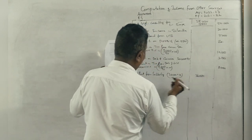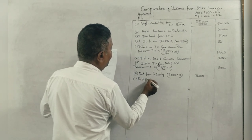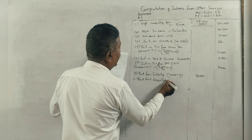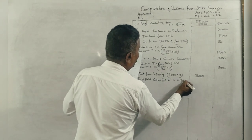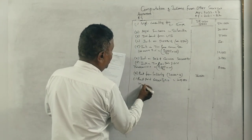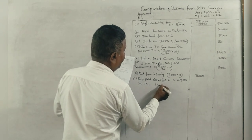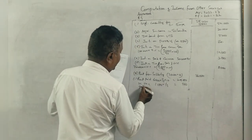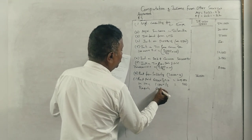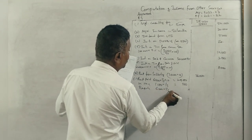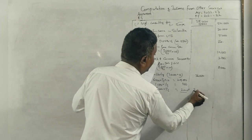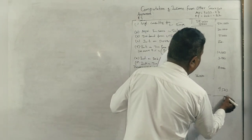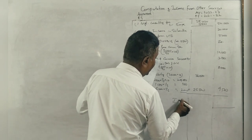Less: Rent paid for the sublet portion, Rs. 6,000 into one-third into 12 is Rs. 24,000. Municipal taxes, Rs. 1,500 into one-third is Rs. 500. Repairs, Rs. 6,000 into one-third is Rs. 2,000.